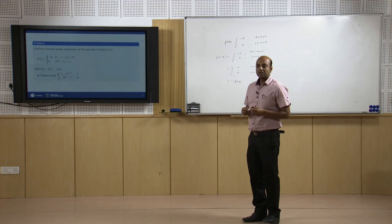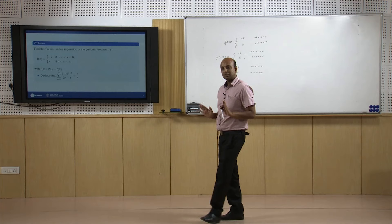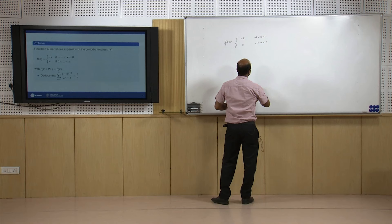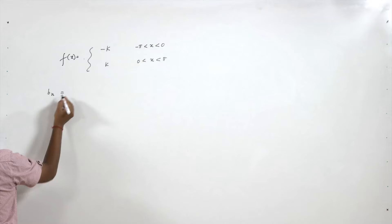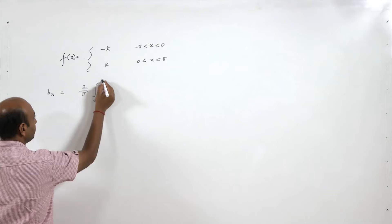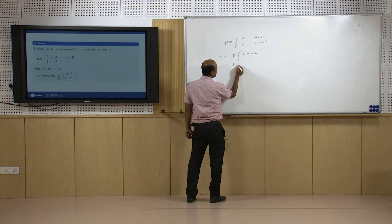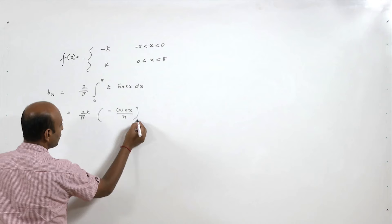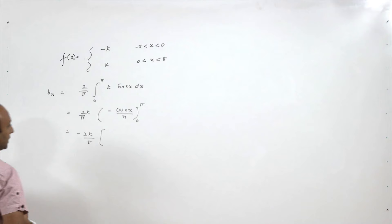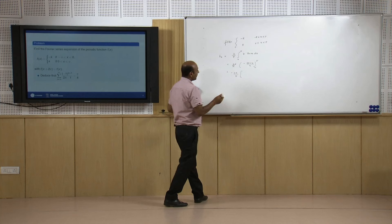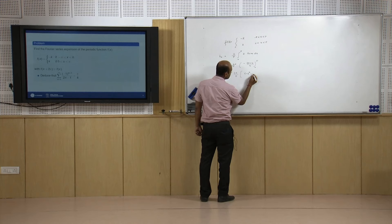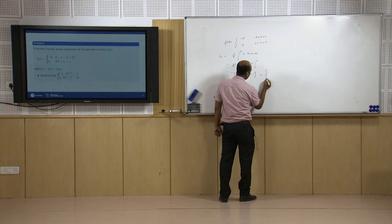Since f(x) is odd, a₀ = 0 and aₙ = 0; the Fourier expansion contains only sine terms. bₙ = (2/π) ∫₀^π k sin(nx) dx = (2k/π) [-cos(nx)/n] from 0 to π = (2k/π) · (1/n)(1 - (-1)ⁿ) = (2k/nπ)(1 - (-1)ⁿ).